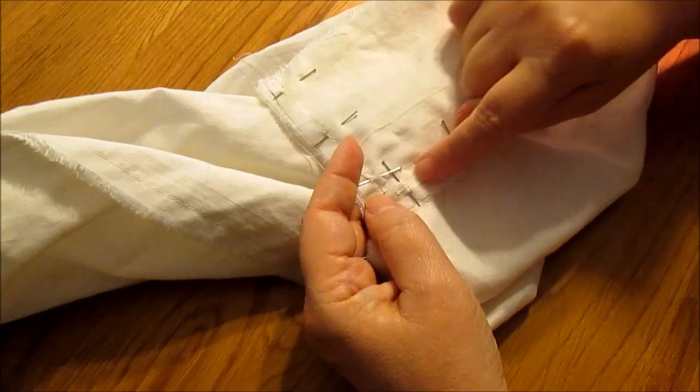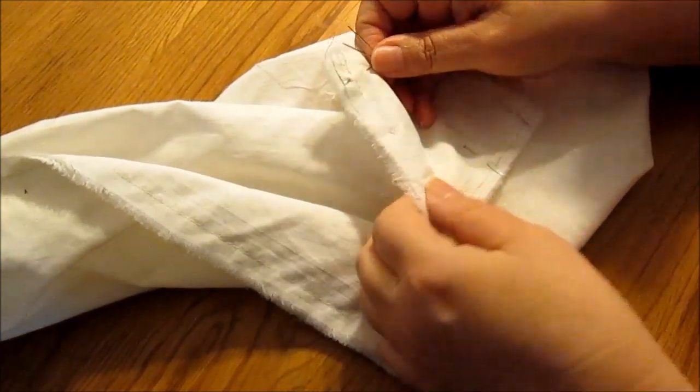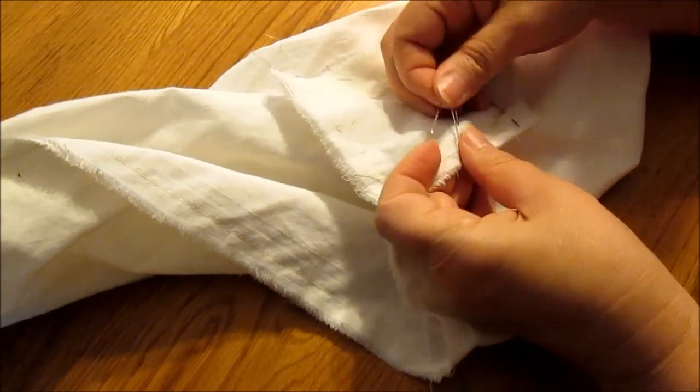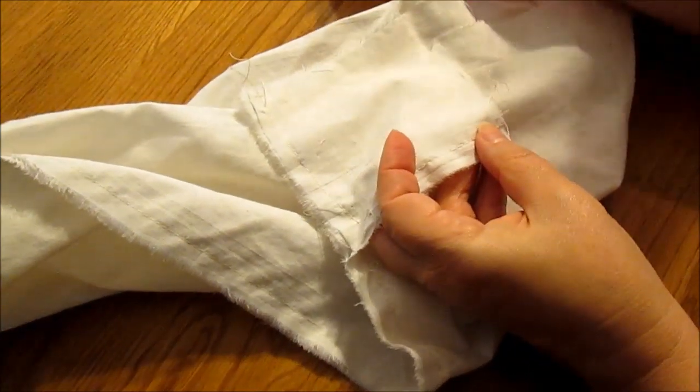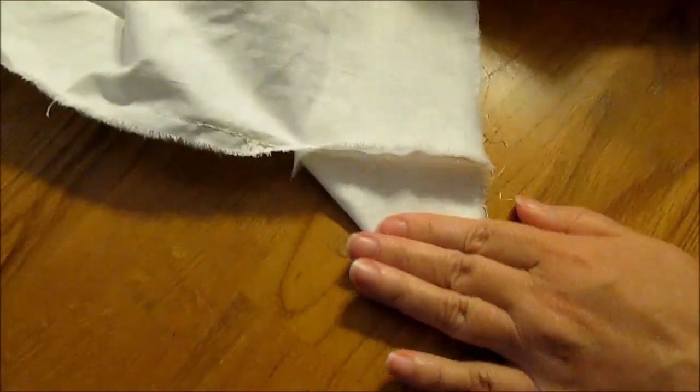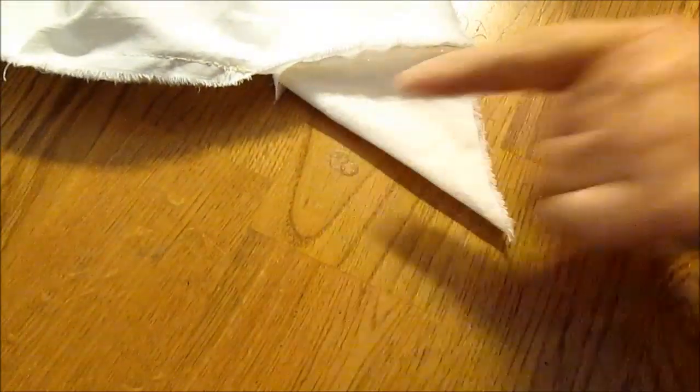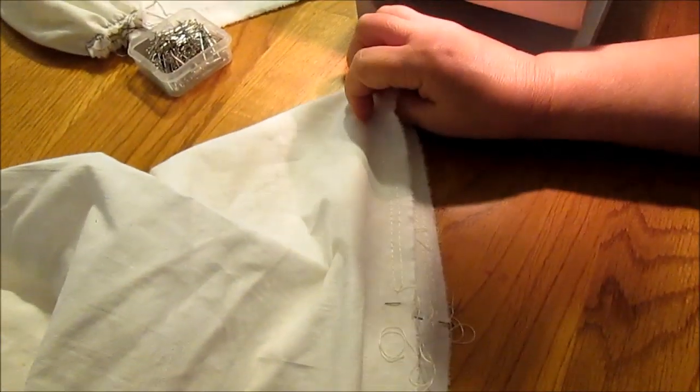Okay now I have the two lines of stitching. I'm going to take out the pins. Take the tip and when I lay this out we've got the gusset right here. This is the armpit. This place up here where we're going to gather, this is the top of the shoulder.